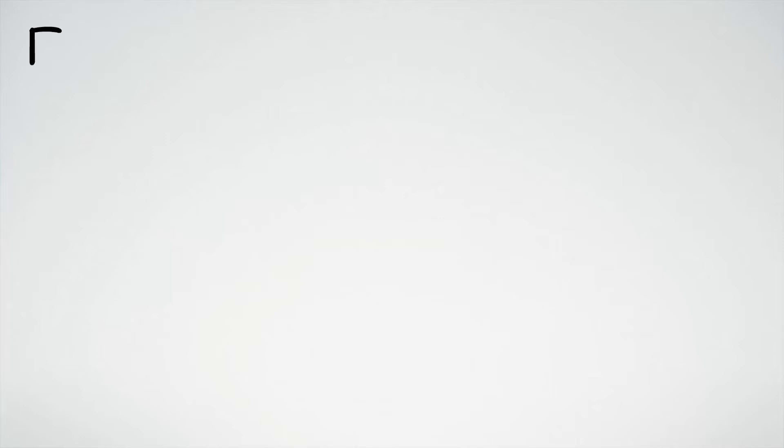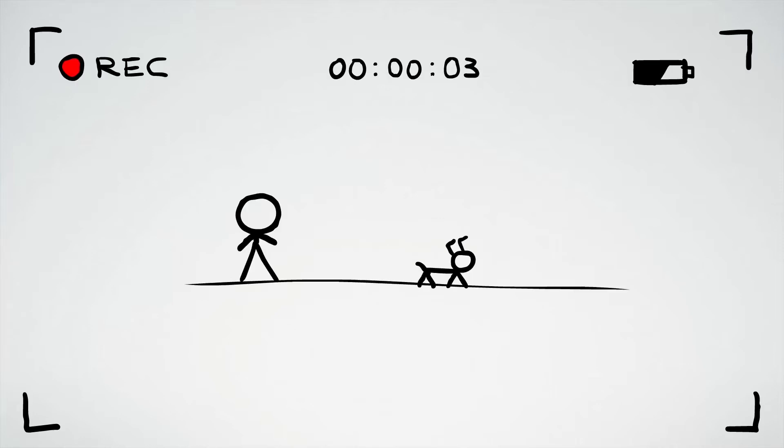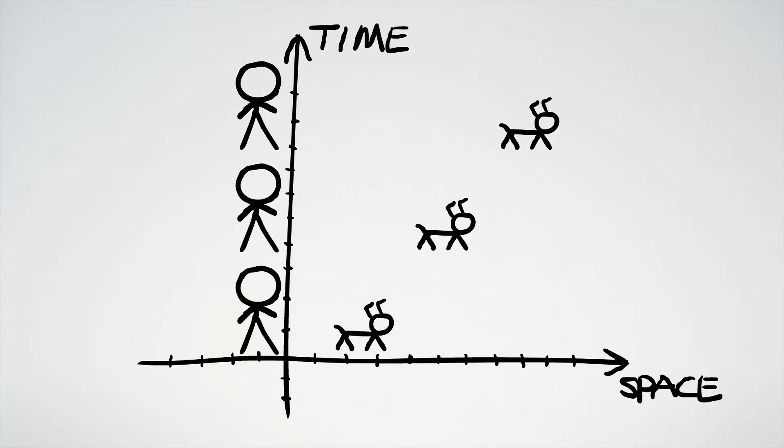If we take snapshots every second, then we can get the dog's positions at different times. Stacking all these snapshots gives us the space-time diagram of the person and his dog. The lines that represent their journeys are called world lines.